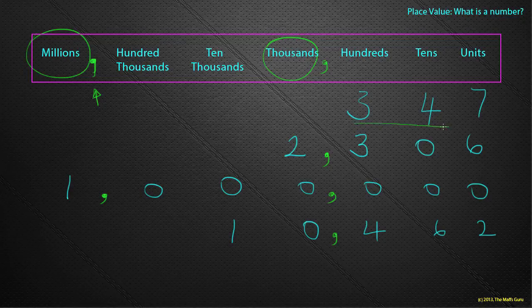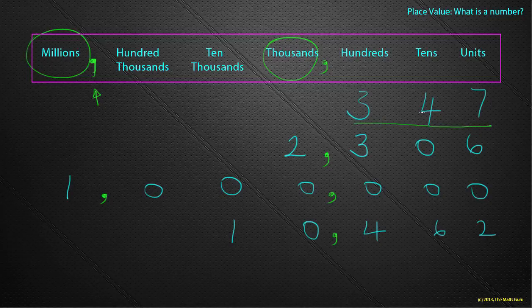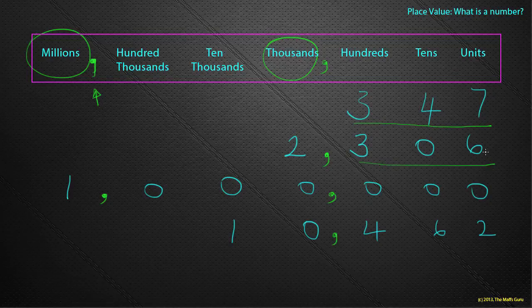And notice that the numbers are grouped in threes. So there are three numbers here and we just say them as 347. This number here is grouped into three. Three hundred and six.